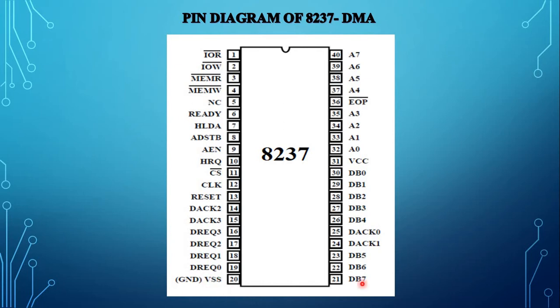Pin numbers 21, 22, 23, 26, 27, 28, 29, and 30 are DB0 to DB7, the IO data bus. It is a bidirectional data bus connected to the system bus which carries data — totally 8 lines, DB0 to DB7.